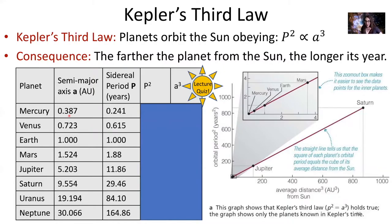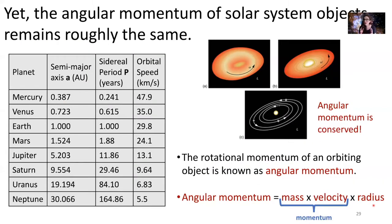This law holds within our solar system and others too. Another component of this is angular momentum. Regular momentum is the mass of a body times its velocity. Angular momentum is the rotational equivalent — mass times velocity. If you are going around something in a circle or an ellipse, your angular momentum is your mass times your orbital speed times the radius of that orbit.